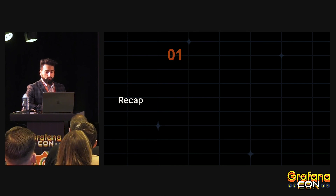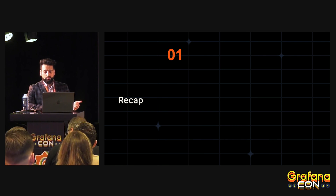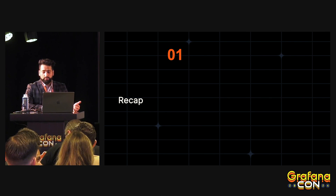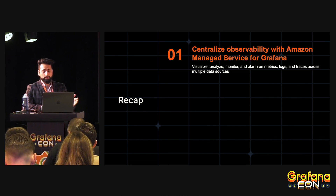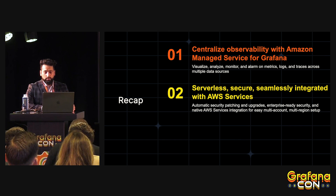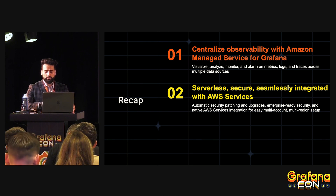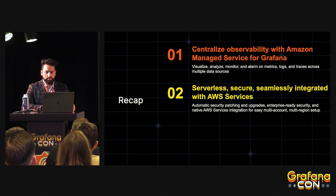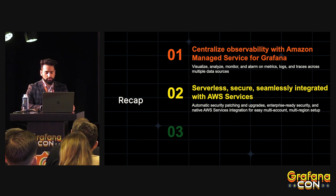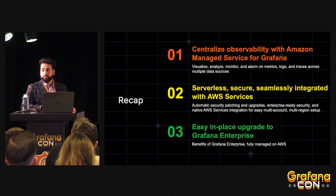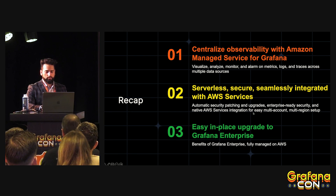Let's quickly recap. It's very easy to create a Grafana workspace using AWS Managed Services to bring together observability data sources across multiple AWS services and also across multiple clouds. Grafana workspaces are fully managed with automatic security patching and version upgrades, so you do not have to worry about the underlying infrastructure — AWS takes care of that. You can also get data from multiple services deployed across regions, and easily upgrade to Amazon Grafana Enterprise for more enterprise-level plugins.